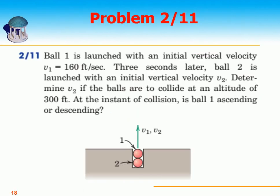This is problem 2-11. Ball 1 is launched with an initial vertical velocity V1 equal to 160 feet per second. Three seconds later, ball 2 is launched with an initial vertical velocity V2. Determine V2 if the balls are to collide at an altitude of 300 feet. At the instant of collision, is ball 1 ascending or descending?